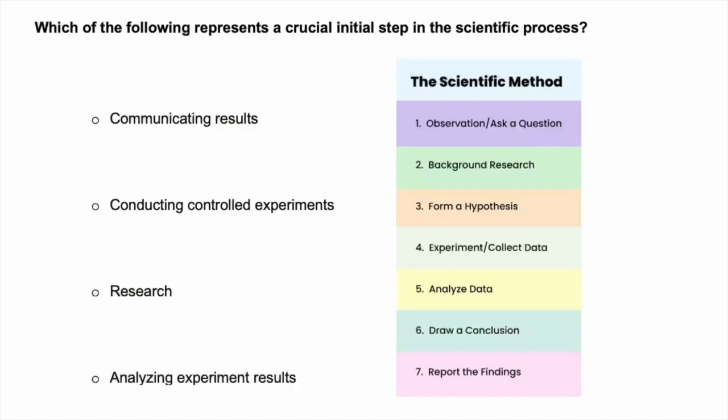So as you can see, all of the answers here are steps in the scientific process. But since it is a systematic approach, we are going to follow the order and look for the initial step in this process. Based on what we now know, we can exclude communicating results, because that would come at the end of the process. We can exclude conducting controlled experiments, because there are initial steps that need to take place before that.